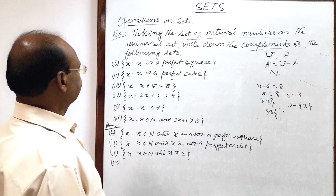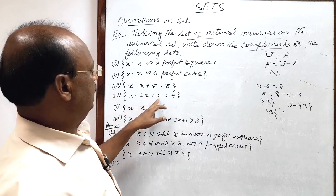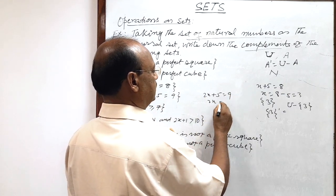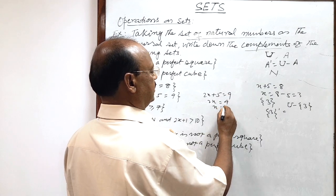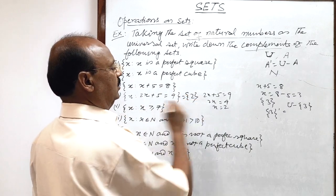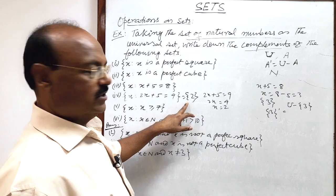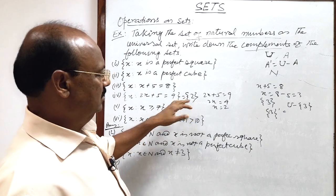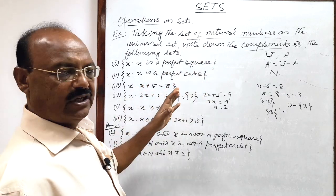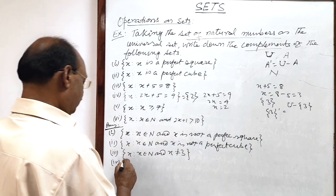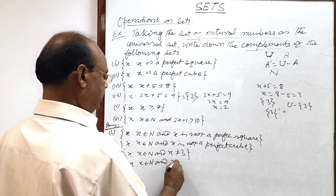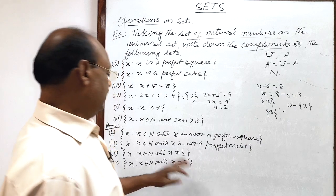Fourth question: x such that 2x plus 5 equals 9. Solving: 2x + 5 = 9, so 2x = 9 − 5 = 4, and x = 2. This is a set having only the element 2. Its complement is obtained by removing element 2 from the set of natural numbers. So we get all natural numbers other than 2. The answer is: x such that x belongs to the set of natural numbers and x is not equal to 2.